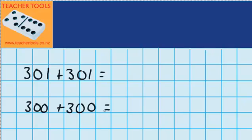Now let's just work out how I've changed this question into this question here. Well, to change this 301 into 300, I had to subtract 1. And to change this 301 into 300, I also had to subtract 1.